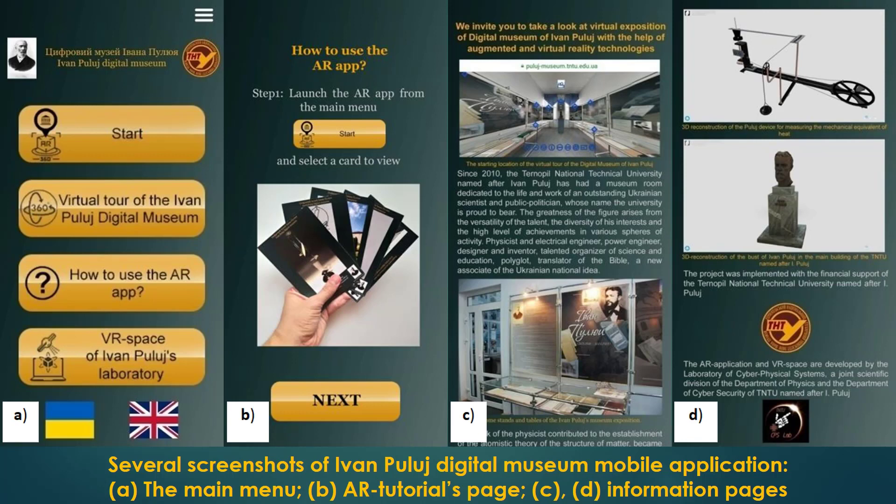On this slide we can see the interface of the interactive mobile application with elements of augmented reality technology for the Ivan Poulou digital museum. The UI is based on intuitive icons accompanied by textual explanations. For the convenience of the user there is an option to switch the language of information content display. The educational part of the application which instructs the visitor on the use of the AR functionality is important to be read.